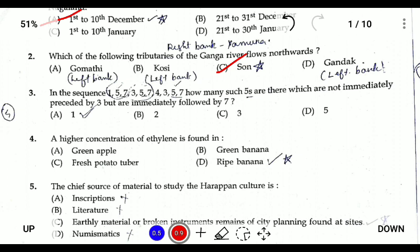Question three: in a sequence 1, 5, 7, 3, 5, 7, 4, 3, 5, 7 — how many fives are there which are not immediately preceded by three but are immediately followed by seven? The answer is one.